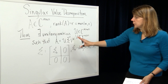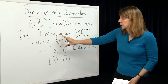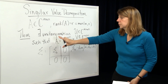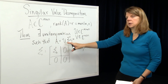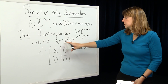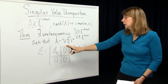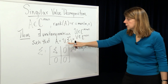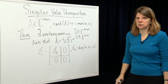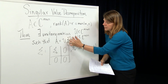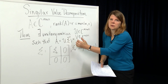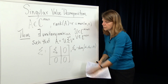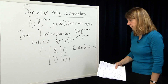The theorem states — and this is a theorem we're not going to prove — the existence of such unitary matrices U and V, such that A can be decomposed into this form. And it's this form that turns out to be very useful as we use it further in linear system theory.